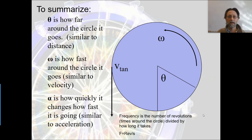To summarize, remember that theta is how far around the circle it goes. It's similar to a distance. Omega is how fast around the circle it is going, and it's similar to a velocity. And then alpha is how quickly it changes how fast it is going, and it's similar to acceleration. The tangent velocity, which we studied earlier in the fall, is this idea that the velocity will come off at a straight line at a constant speed if it were to stop rotating.